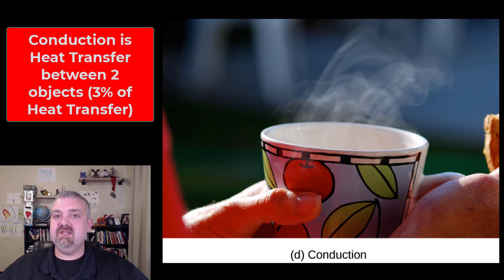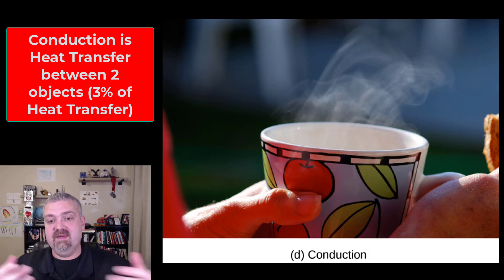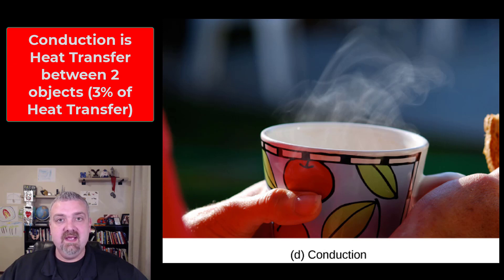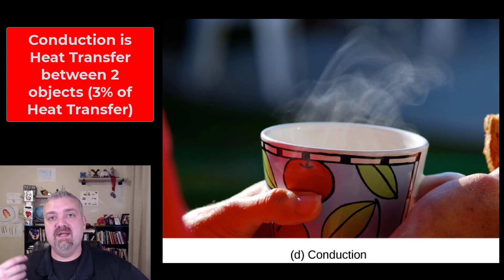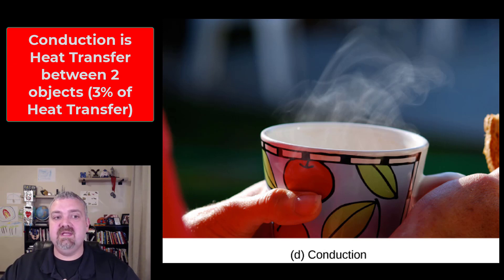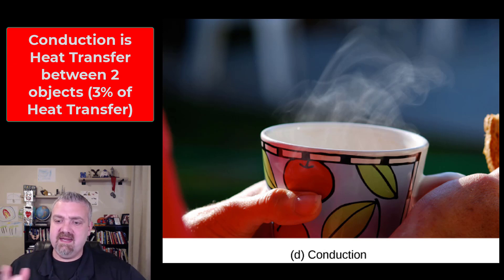Let's start with conduction. Conduction is the transfer of heat between two objects that are touching each other. You can guess by looking at this picture that the warm tea or coffee is going to transfer heat from the mug into the fingers. I think of this more with seats — if you sit down and the seat is real cold, it's going to make you colder; if the seat is real hot, it's going to make you hotter. That is conduction when two things come in direct contact. This is only about 3% of heat transfer that occurs with humans, so it's not a huge deal.